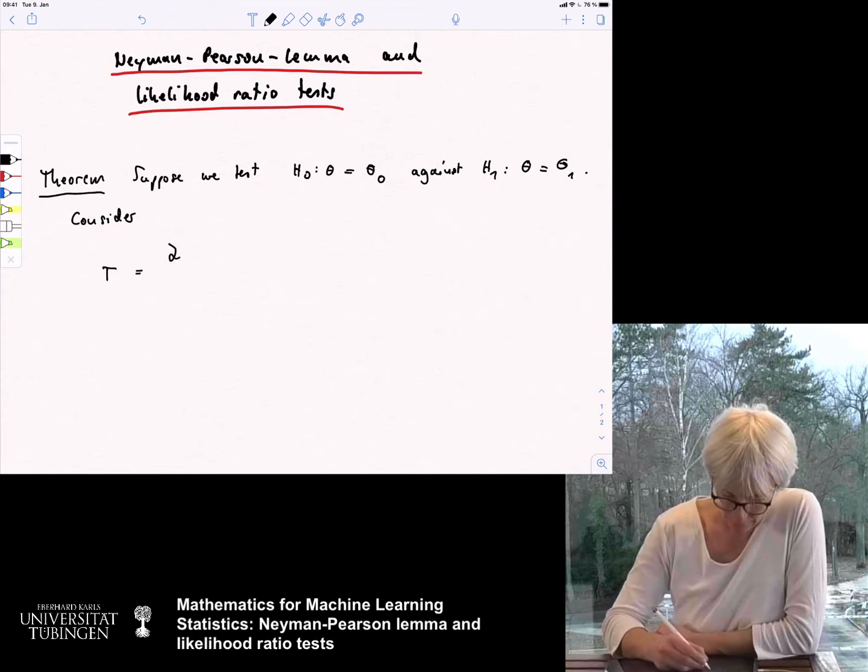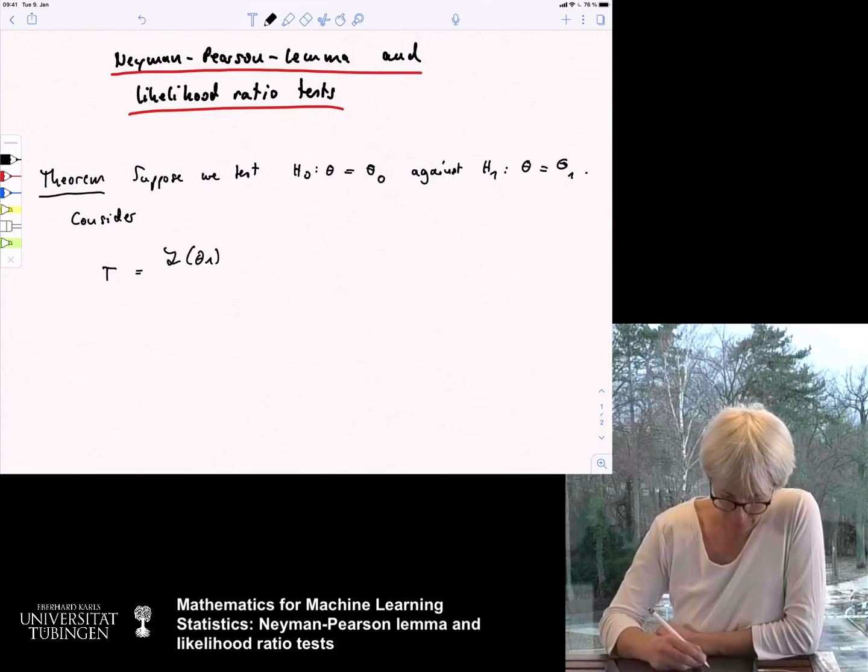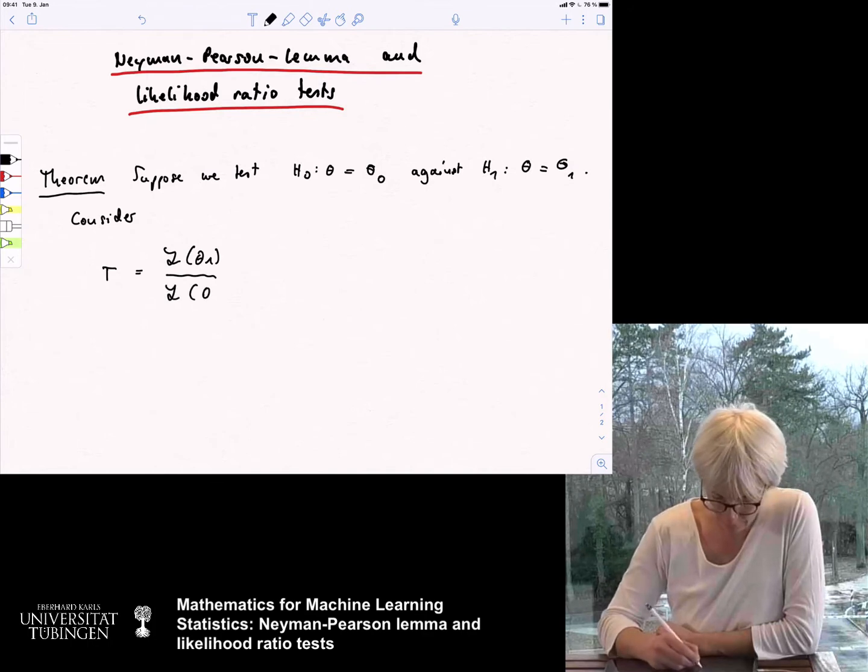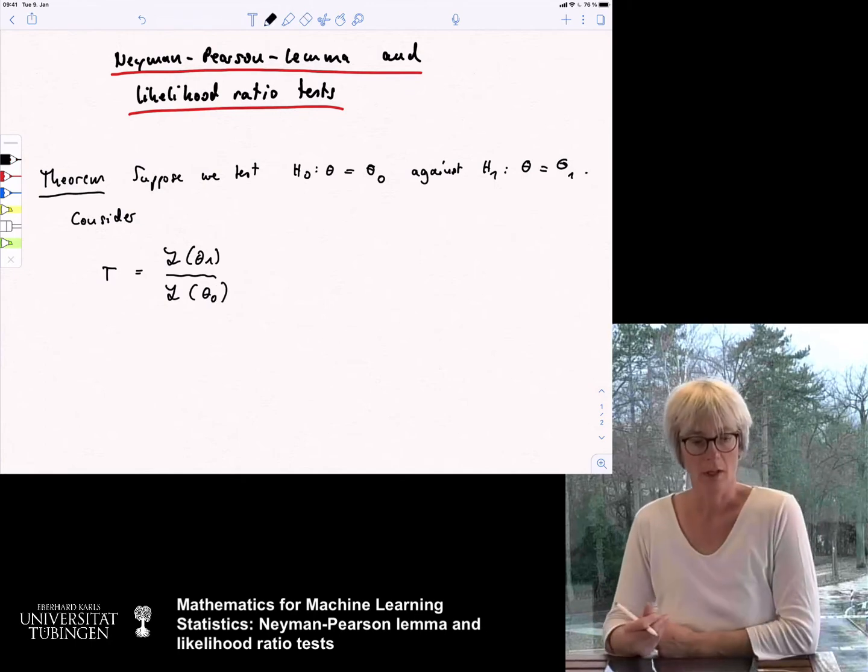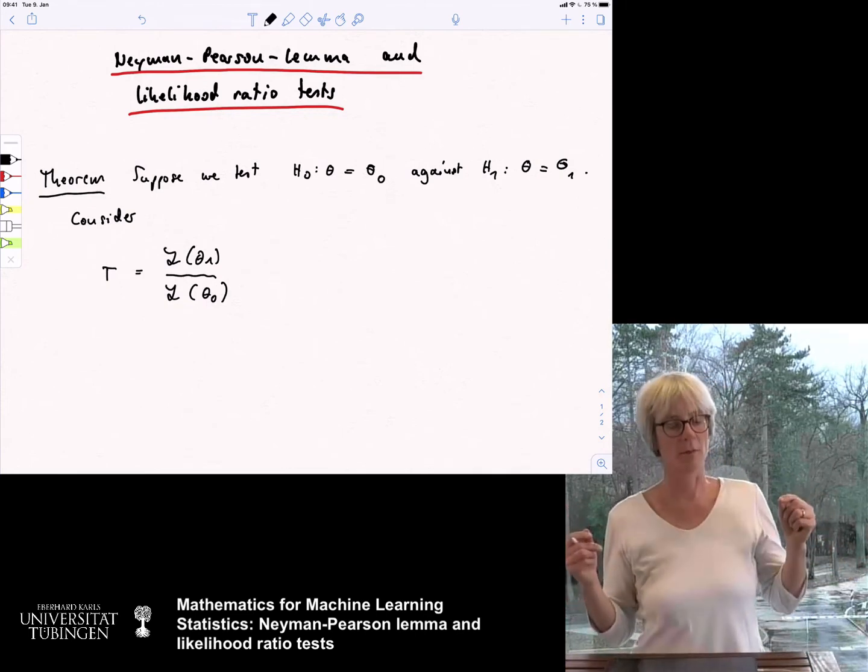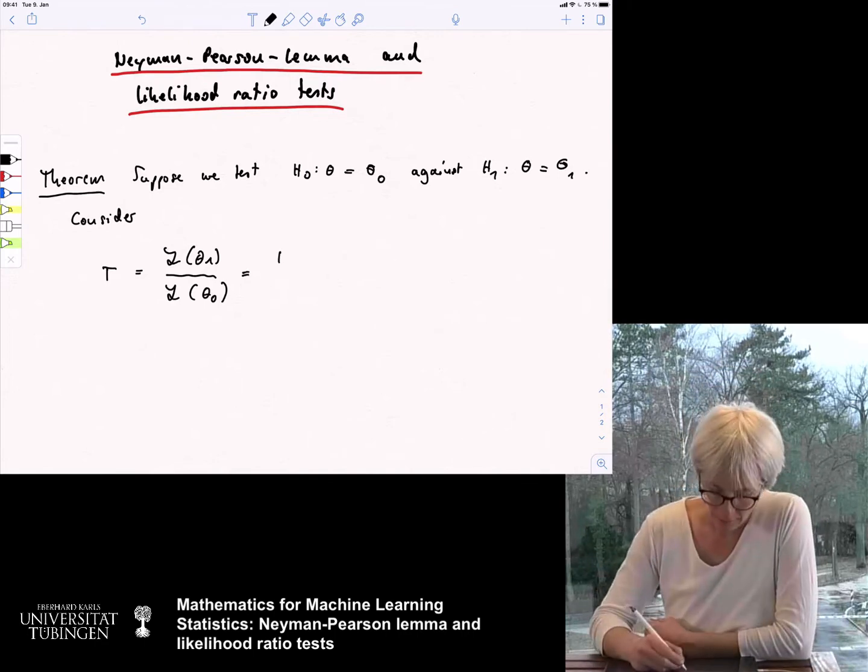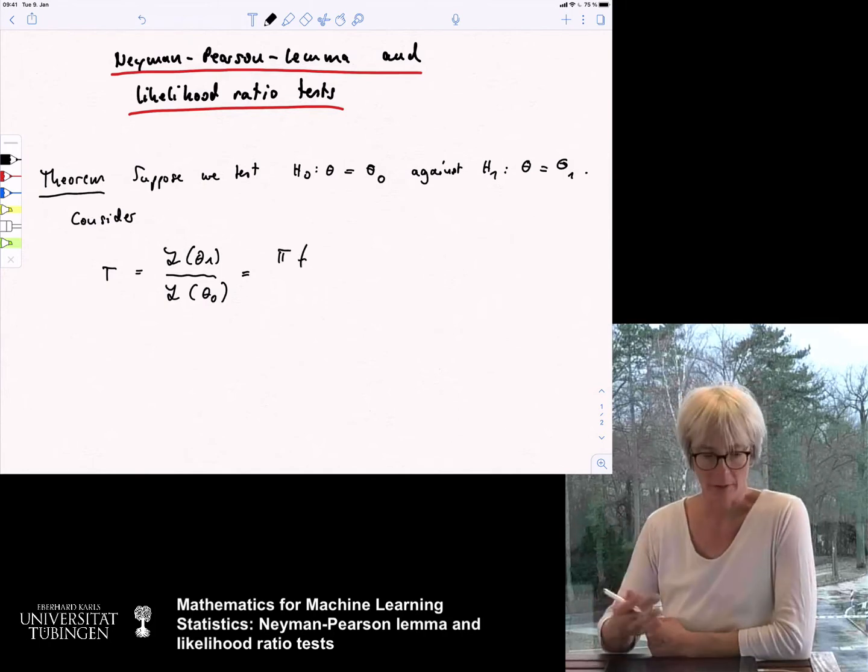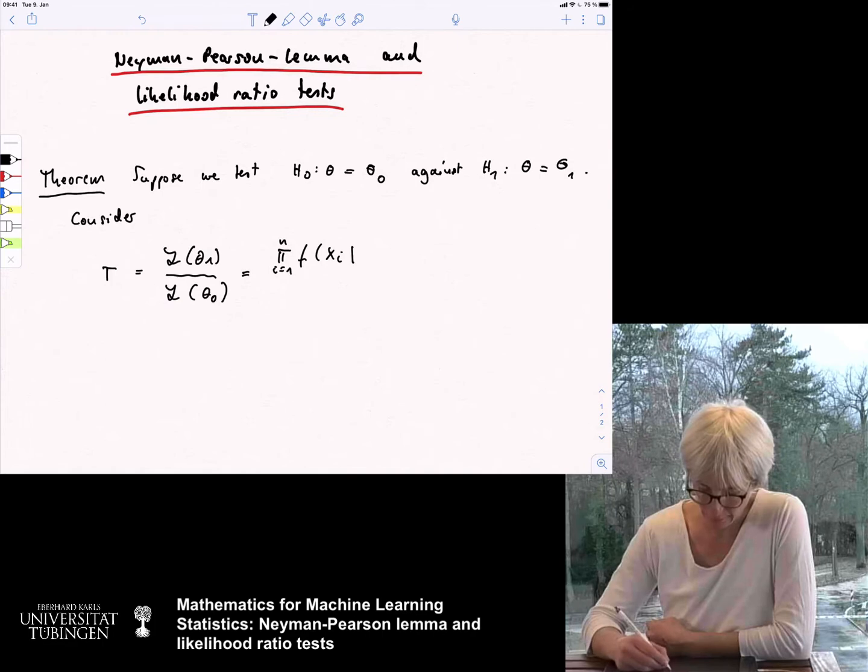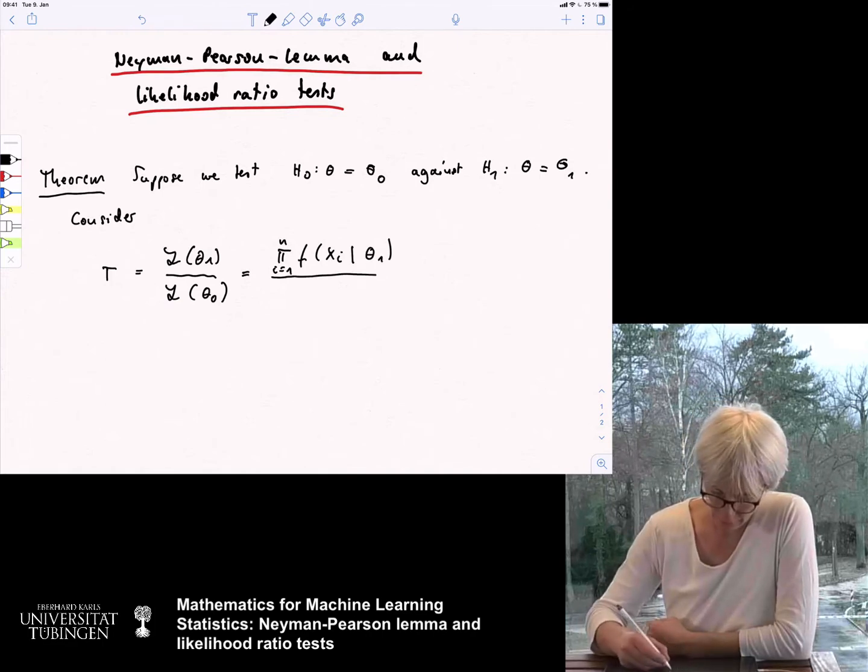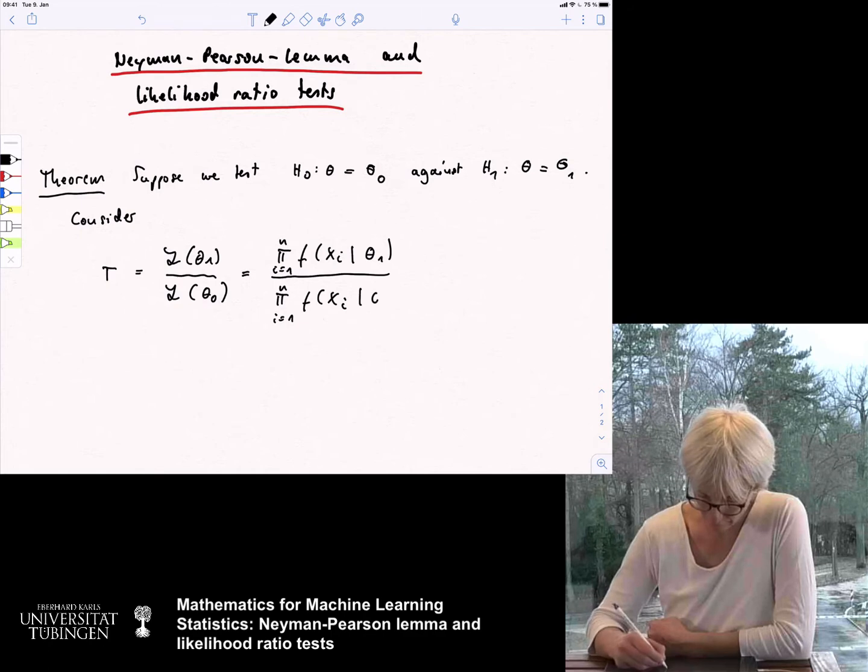I just write T, which is the likelihood of theta 1 over the likelihood of theta 0. And so, what is it? So, we have these two parameters, theta 1 and theta 0 that we might want to compare. And now, what is the likelihood? The likelihood is the product we have independent samples. So, I didn't write all these assumptions, but we're in the standard setting. So, the product from i equals 1 to n, the density corresponding to xi given theta 1 over the same thing corresponding to theta 0.